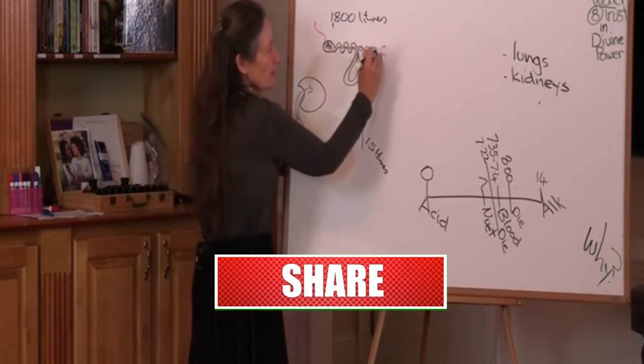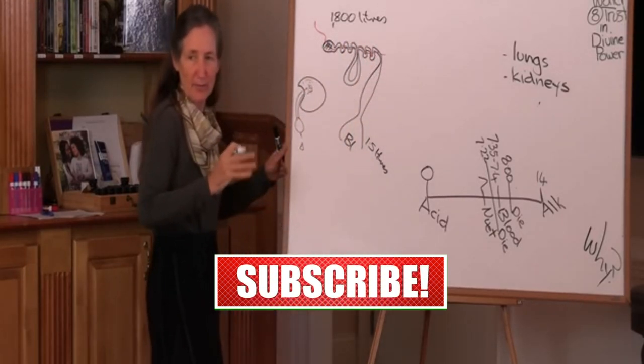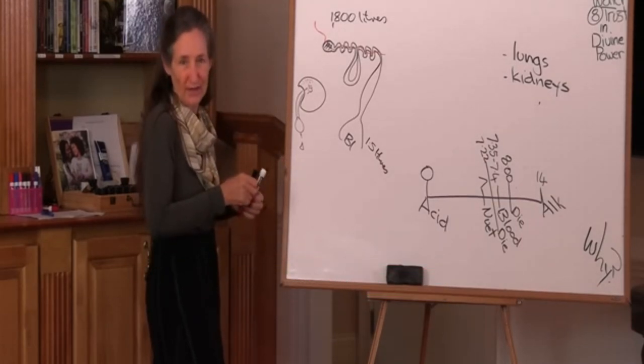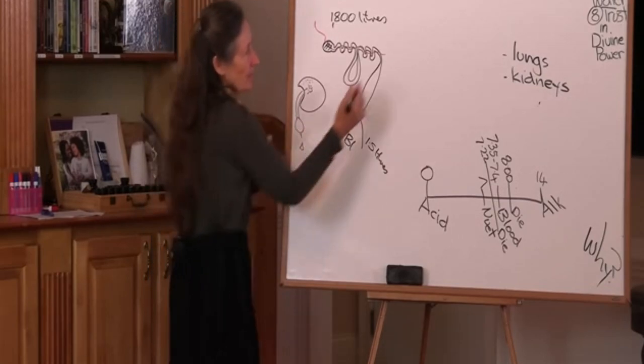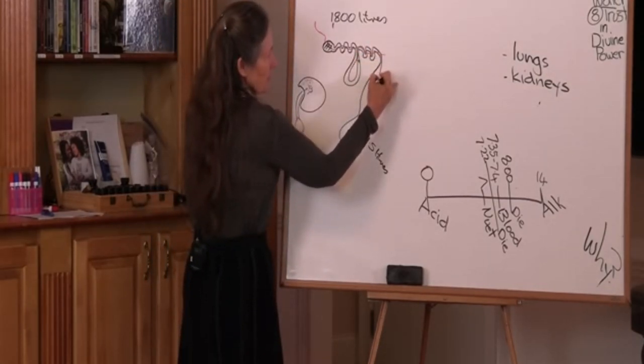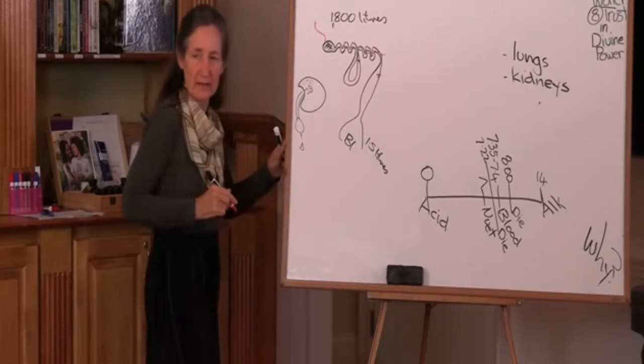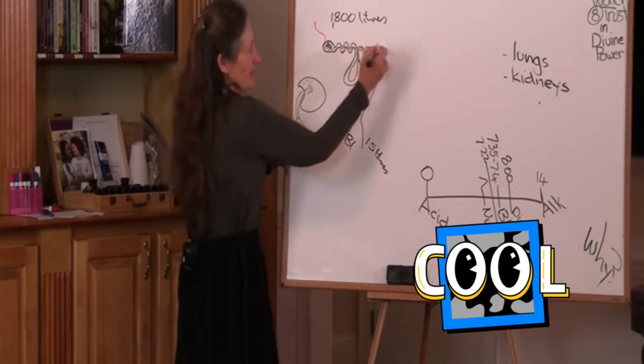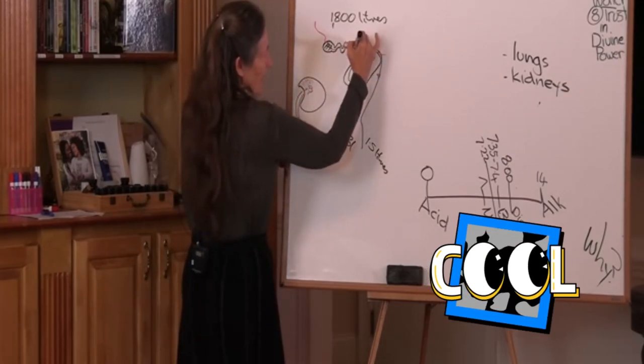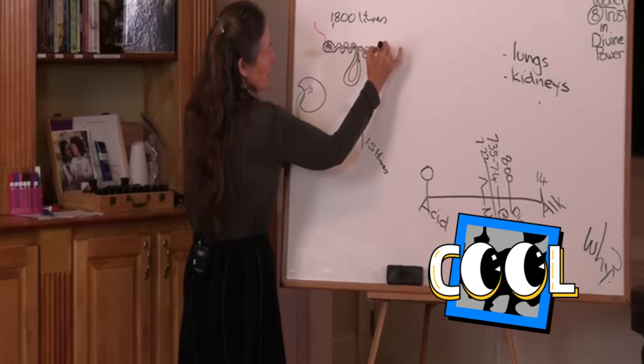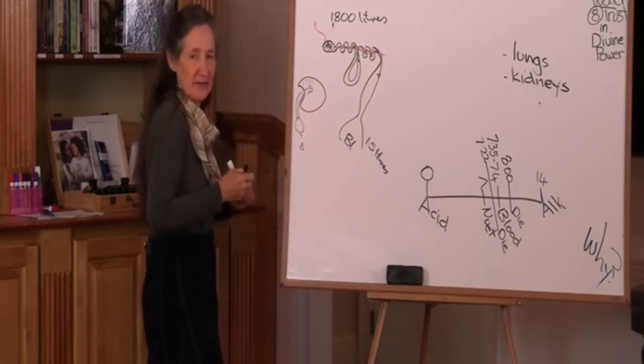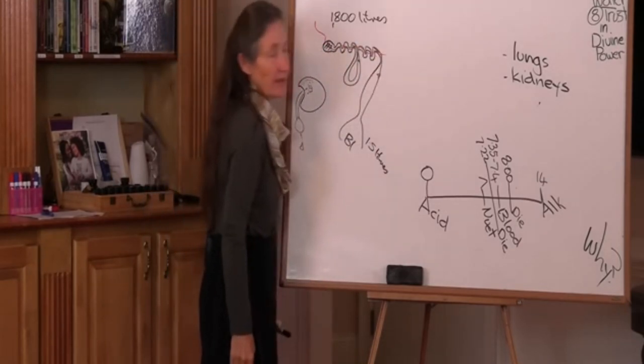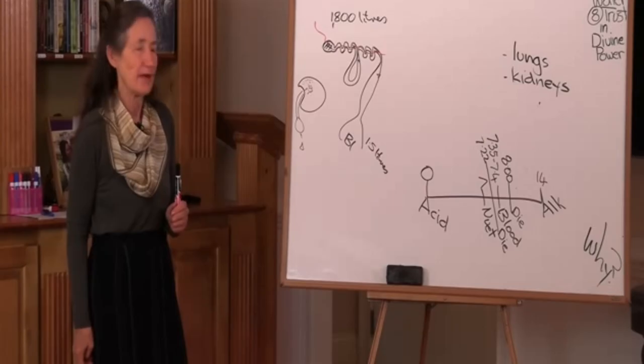And it's in the reabsorption area that pH is being monitored. So let's say the pH of the blood is getting to acid, and we'll look at why that is in the moment. Then extra acid is dropped into the tubules to be urinated out. But let's say the pH of the blood is going to alkaline. Well, it is here that extra acid is pulled back out of the tubules and into the blood. So that is how the kidneys are constantly monitoring and balancing, if necessary, the pH of the blood.